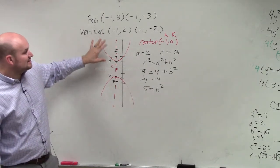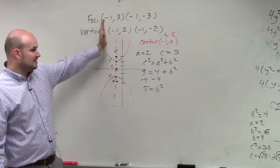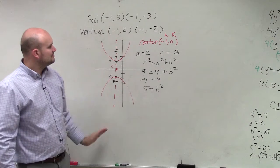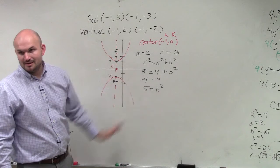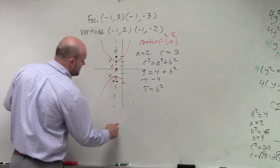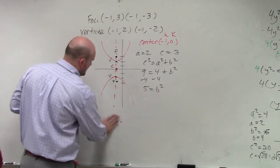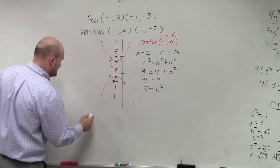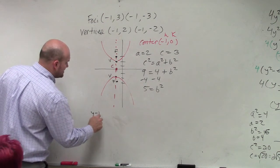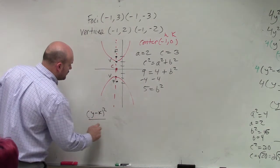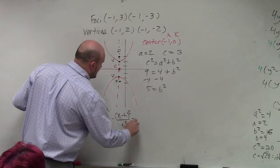Now, the only other thing is, remember guys, this is a vertical transverse axis, right? So that means what should be under my, should my a be under my x or a be under my y? A should be under my y. And remember, it's always a squared. So actually, let's just write it like this. It has to be x. So it should be y minus k squared over a squared minus x minus h squared over b squared equals 1.